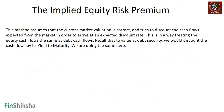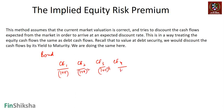Now we move to the third method: the implied equity risk premium. This method assumes the current market valuation is correct. Assume the stock market is like a bond — you have a series of cash flows coming from the stock market, and if you discount them by a certain rate, you should get the present value or price. Typically you go on till infinity; at some stage you calculate a terminal value, and we assume a steady growth rate after the fifth or sixth year.